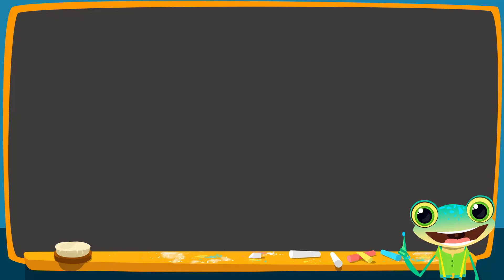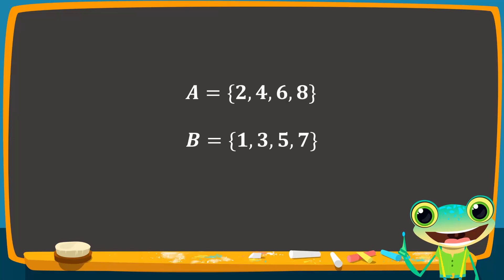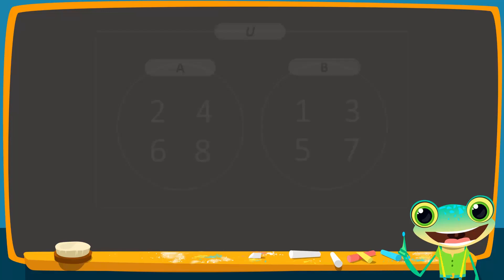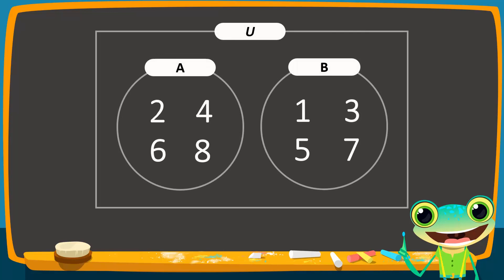What if we have two sets that are disjoint instead of overlapping? Set A contains the even numbers 2, 4, 6, and 8, while set B contains the odd numbers 1, 3, 5, and 7. On the Venn diagram, they are represented by two non-overlapping circles.